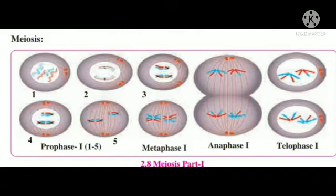The parent cells are considered the jannak peshi. They are separate from each other. Gametes, bijanu (sperm), sports (spores), and gametes are formed by meiosis.